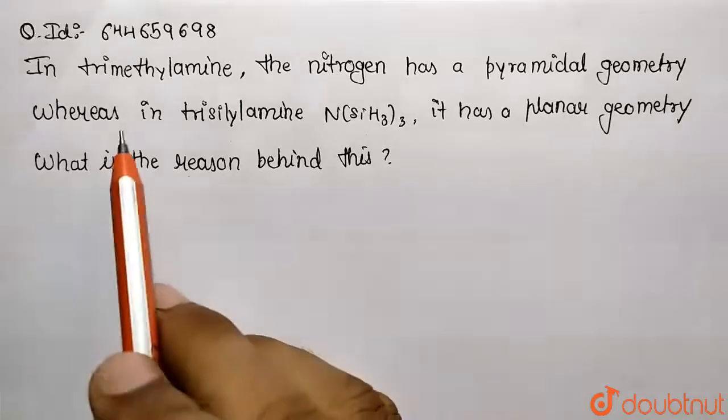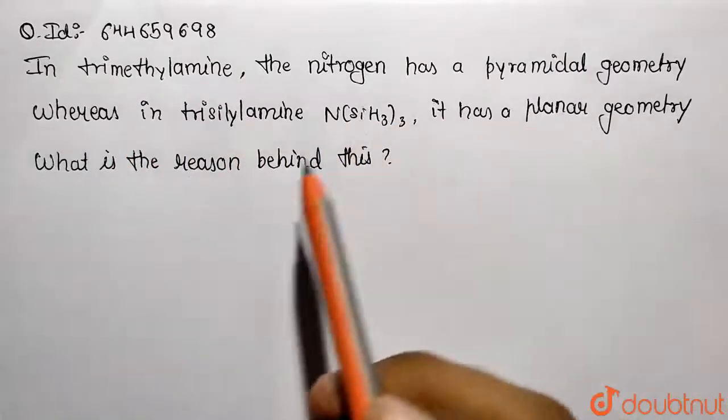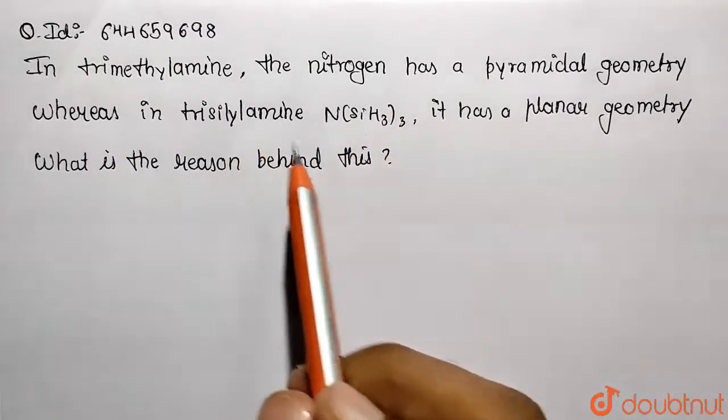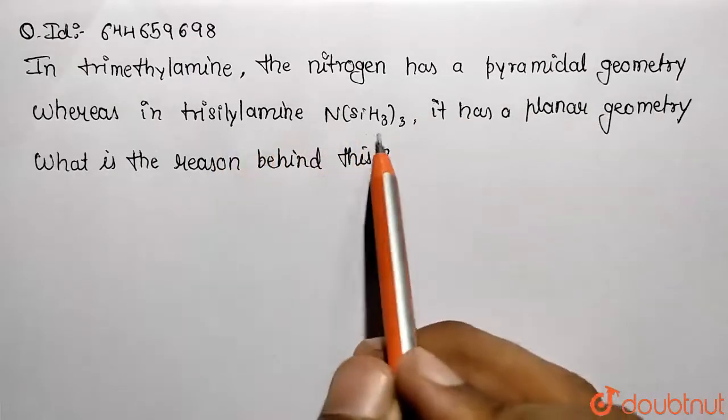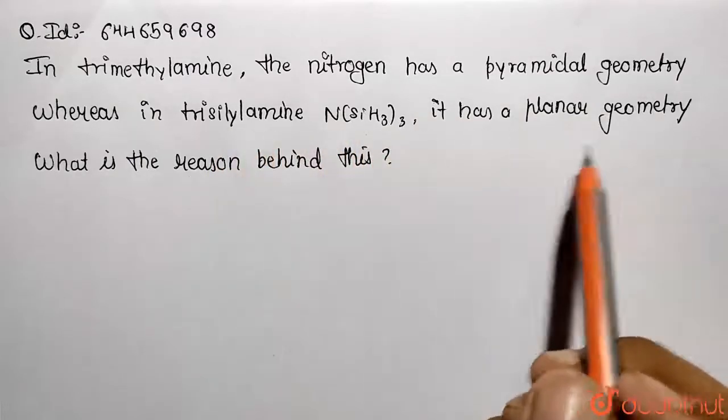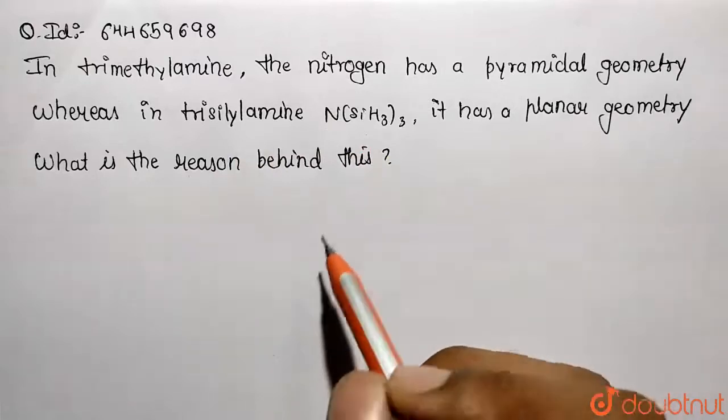We need to answer: In trimethylamine, the nitrogen has pyramidal geometry, whereas in trisilylamine N(SiH3)3, this is the representative formula, it has a planar geometry. What is the reason for this? So the reason is their basic shape.